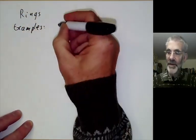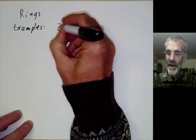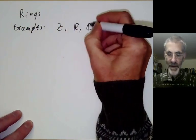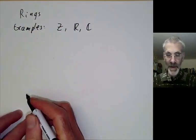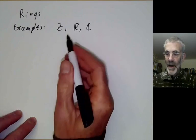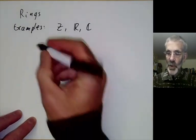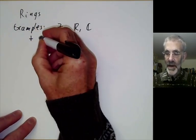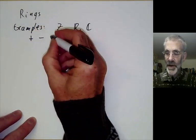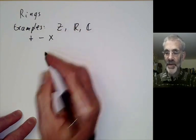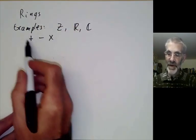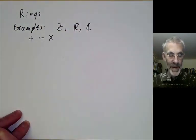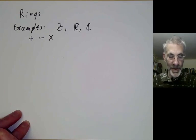First of all we have the integers, the real numbers and the complex numbers. What these all have in common is they have addition and subtraction and multiplication. A very informal definition of a ring is it's something with these three operations.